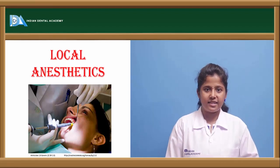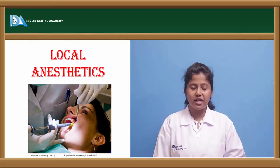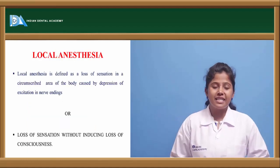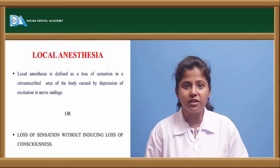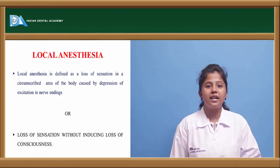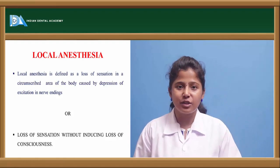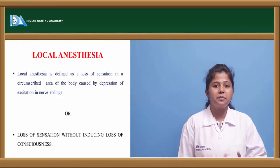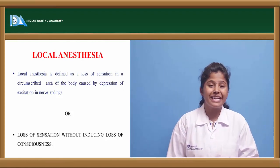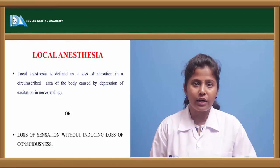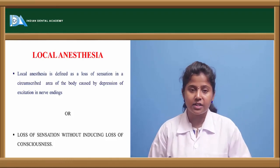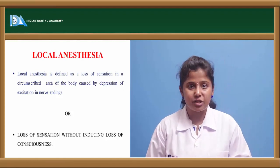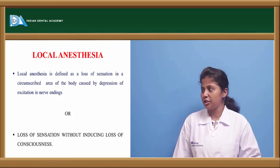Today's topic is local anesthetics. Local anesthesia is the loss of sensation of a localized area, causing depression of the excitation of nerve endings. We are making the person lose sensation in the localized area itself — not the whole body. The person does not become unconscious; only the localized part becomes numb and loses its sensation. This is called local anesthesia.